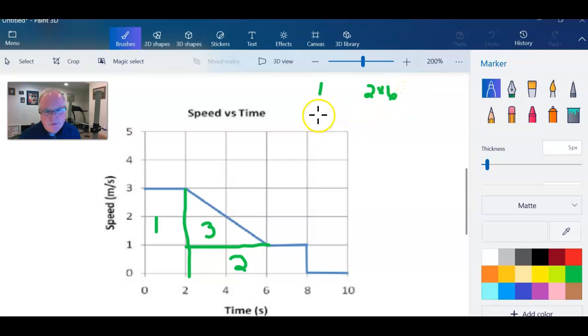All right. For section number two, well, we've got two, four. So two, four, six times one, so one times six. So the base is six and the height is one.